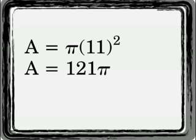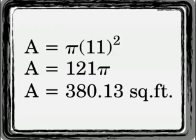121 times pi gives us 380.13 square feet.